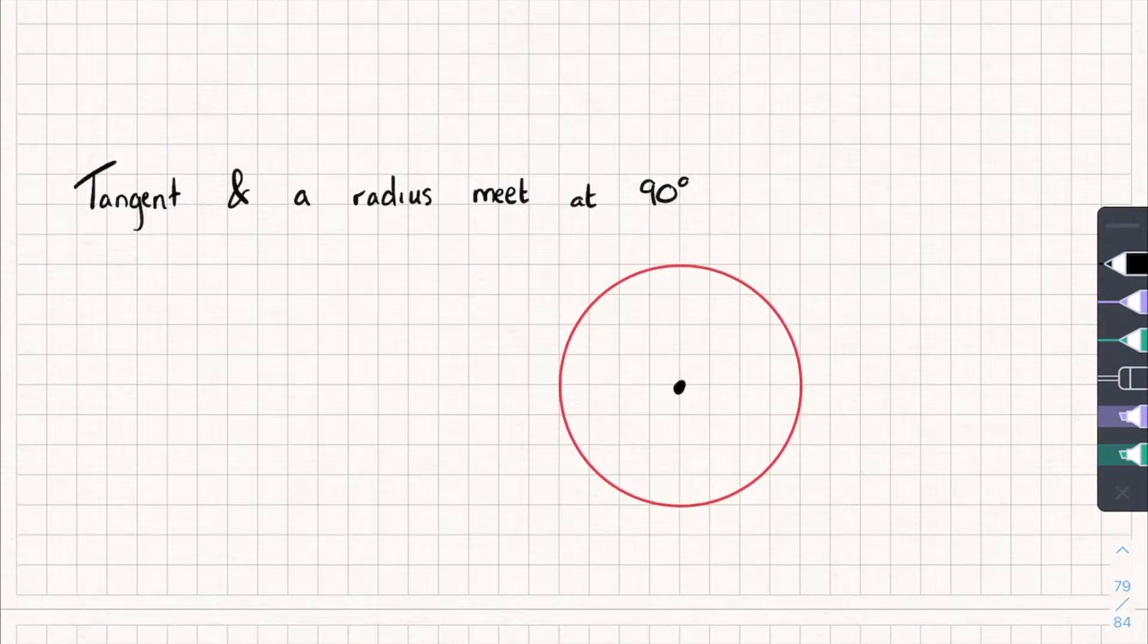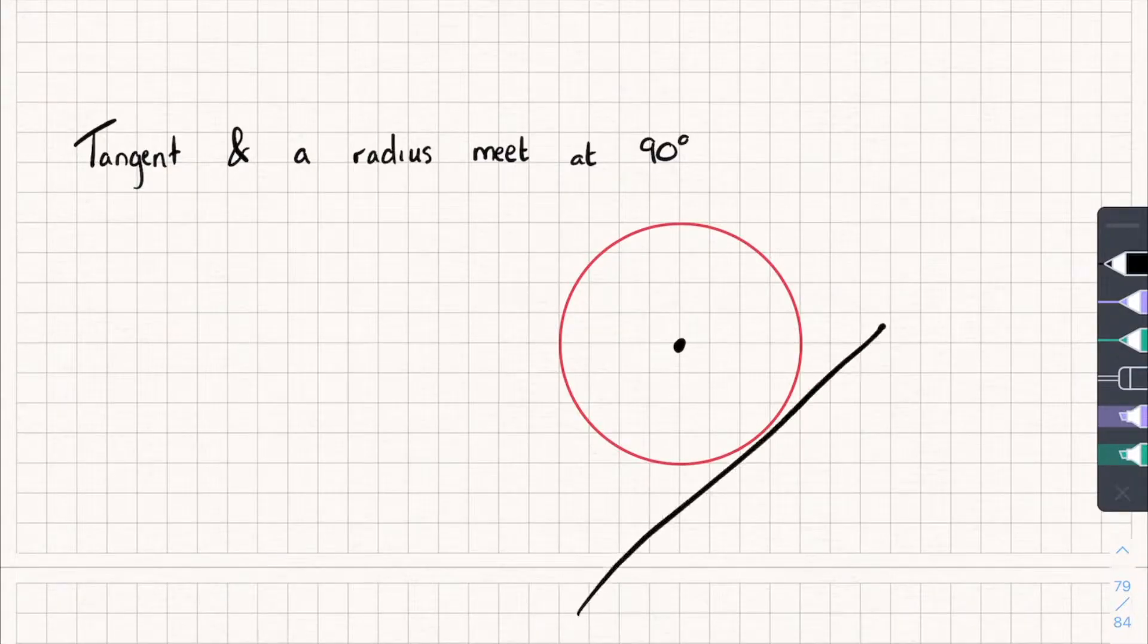The next one says a tangent and a radius meet at 90 degrees. Now a tangent is just a line that touches a single point of the circumference of the circle. So say I draw on a tangent, say there, like this. Now, and I draw a radius that connects to it, so there we go. Now they meet at 90 degrees.